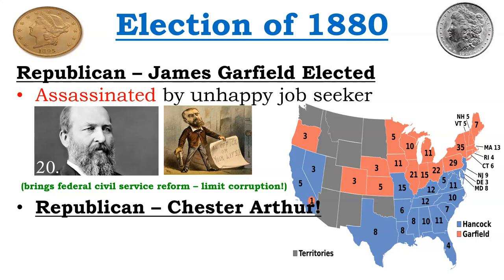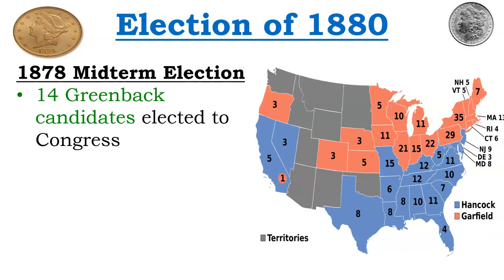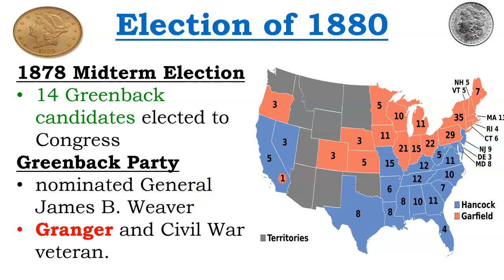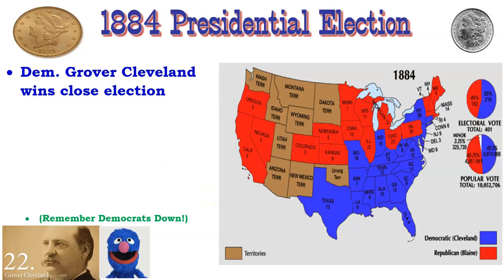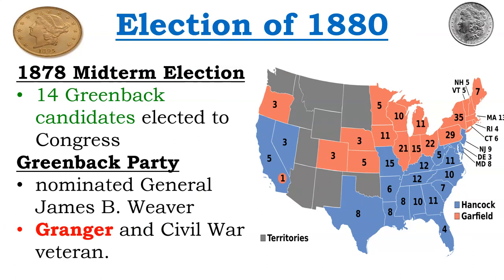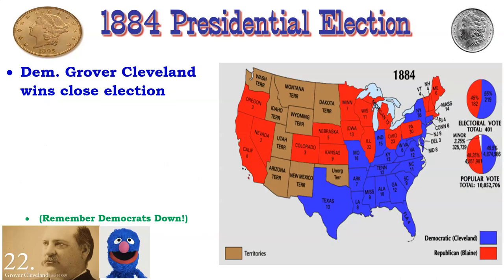Republican Chester Arthur takes over and is probably our least known president. The election of 1880 was also spurred by a movement of Greenback Party candidates winning positions in Congress — the populist bottom-up movement being seen through that party as well. They had nominated General James B. Weaver, who would go on to become a populist representative in the upcoming election.